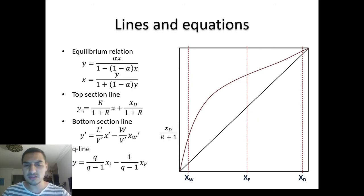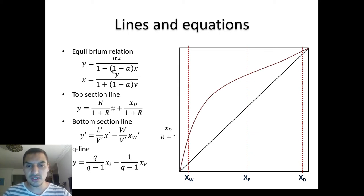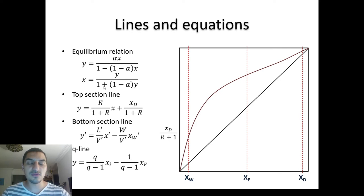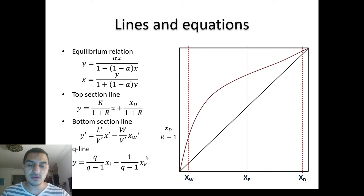After some derivations we reach the equilibrium relation: Y as a function of X, where alpha is the relative volatility — the vapor fraction of the more volatile component divided by that of the less volatile component. This equation works for some systems but not non-ideal ones, where you need a fitted equation instead. We also have the top section operating line and the bottom section operating line, both straight lines, and the Q-line.